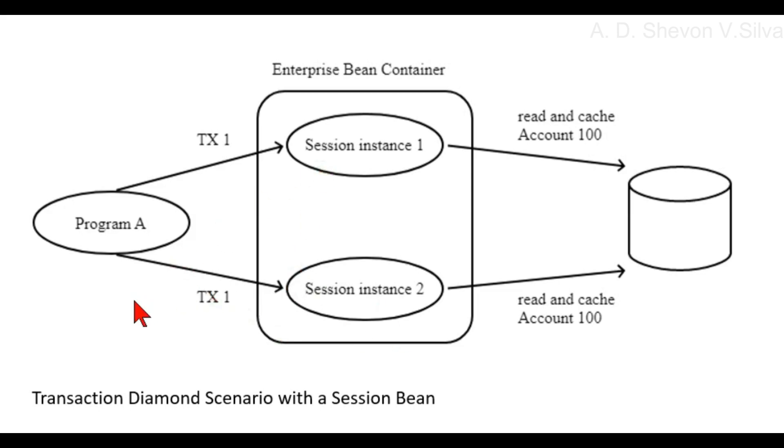If the session object instances cache the same data item, for example, current balance of account 100 across method invocations in the same transaction, most likely the program is going to produce incorrect results.